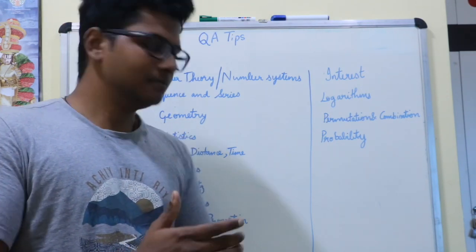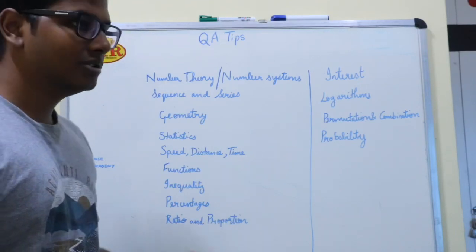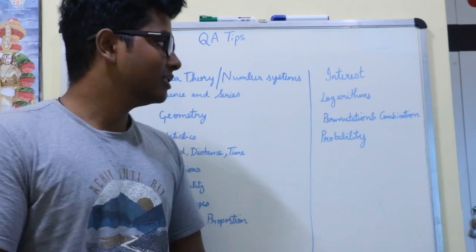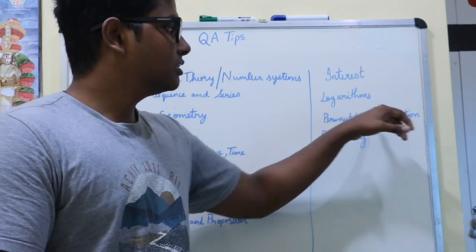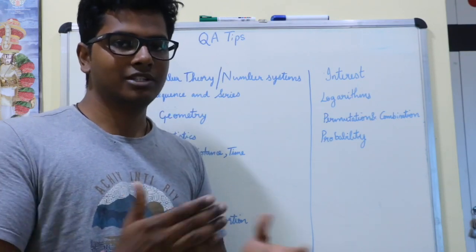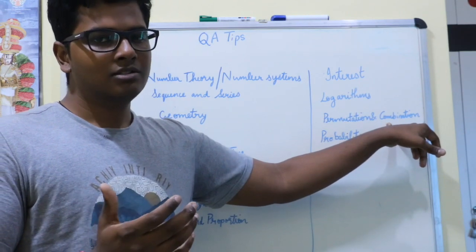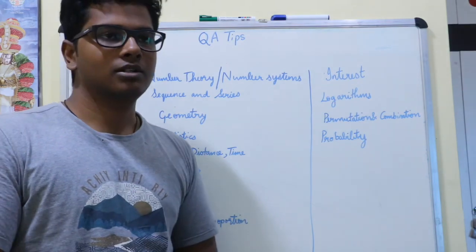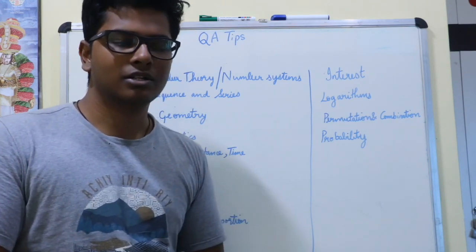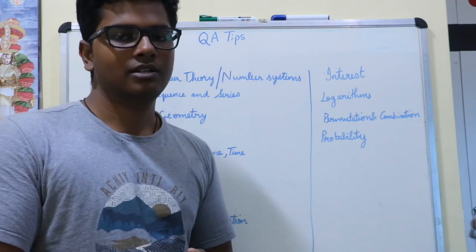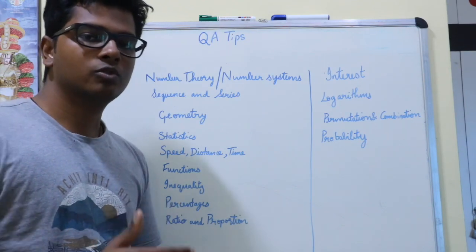Inequalities covers properties of greater than and lesser than. Percentages and ratio and proportion are standard 10th grade topics. Interest covers simple and compound interest. Logarithms have certain properties you should know before answering questions. Permutation and combination is a little tricky, so work on it carefully. Probability covers basic probability and Bayes' theorem, though Bayes' theorem hasn't had many questions in recent CATs.